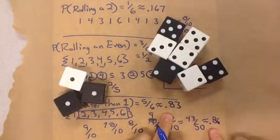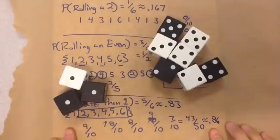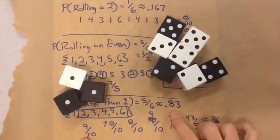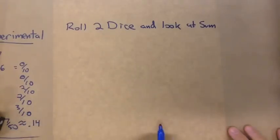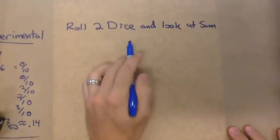They actually got closer and closer. If I just went off ten, I had 0.90 versus 0.83, but it got closer as I went. Now let's change it and say: what if we roll two dice and look at the sum?